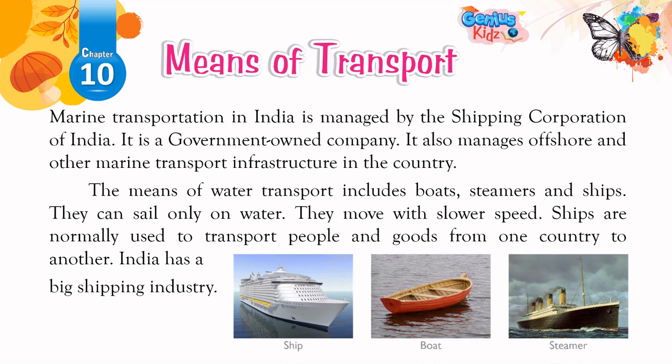Marine transportation in India is managed by the Shipping Corporation of India, a government-owned company, which also manages offshore and other marine transport infrastructure in the country. The means of water transport include boats, steamers, and ships. They can sail only on water and move at slower speed. Ships are normally used to transport people and goods from one country to another. India has a big shipping industry.